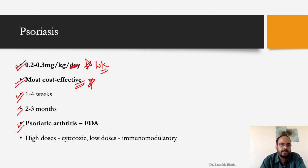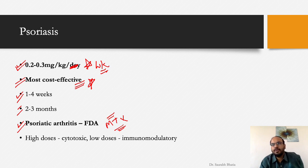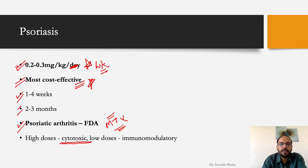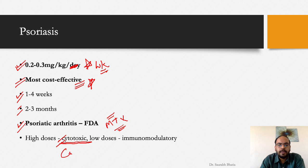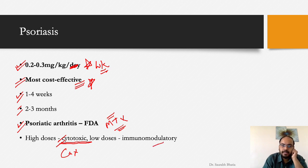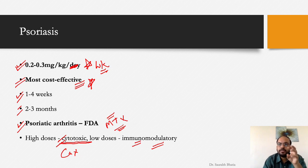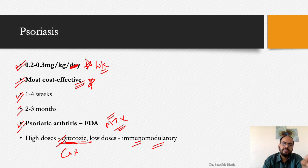High doses of methotrexate — around 100 mg per week — are cytotoxic and used in malignancies. In dermatological indications, low doses of roughly 15 to 25 mg per week are immunomodulatory — they modulate immunity without destroying cells. This is why associated side effects are less common in skin patients compared to malignancy patients receiving methotrexate.